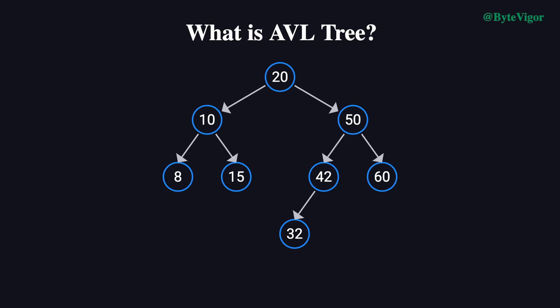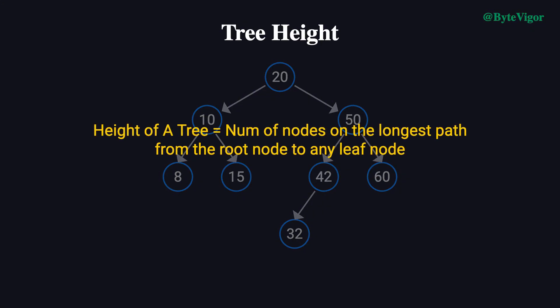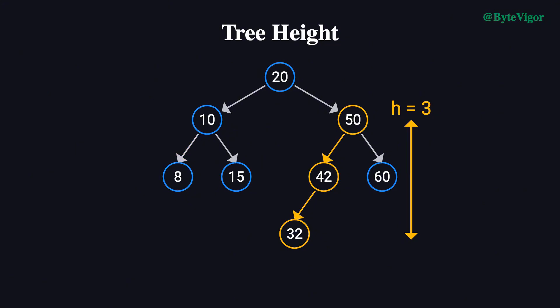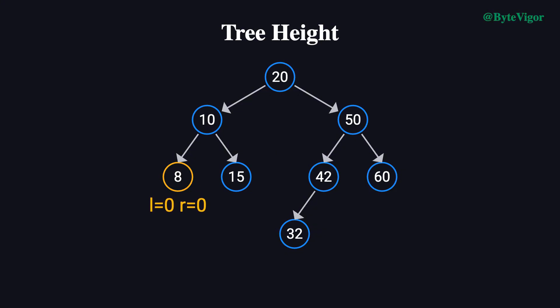Before we dive deeper, let's understand a few key concepts. The first is tree height. In the context of an AVL tree, the height of a tree is defined as the number of nodes on the longest path from the root node to any leaf node. For example, if the longest path from root node 20 to leaf node 32 passes through four nodes, the height is four. The left subtree height of node 20 is two, while the right subtree height is three. For a tree with only one node—say node 8—the height is one. If a tree is empty, its height is zero. For node 8 with no children, both left and right subtree heights are zero. In general, the smaller the tree height, the more efficient the operations, as search, insert, and delete paths are shorter.